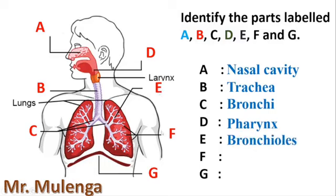Then the part labeled F. At the end of the bronchioles, that's where we have this part labeled F which is going to be formed. The part labeled F is called the alveoli. Then the part labeled G which is down here, we can see this is a muscle. This one is called the diaphragm.